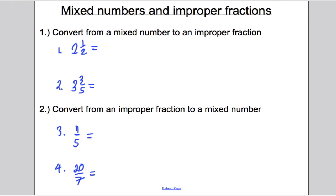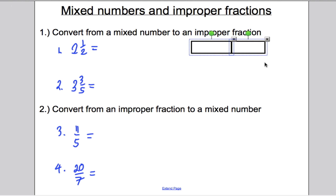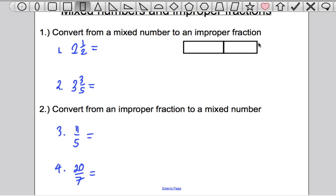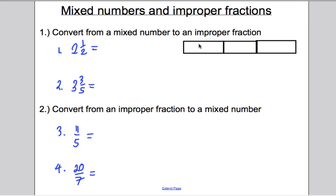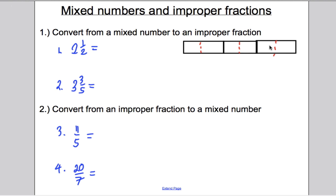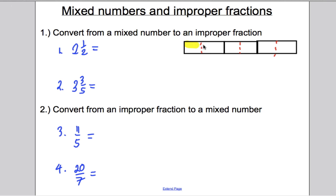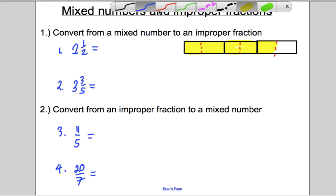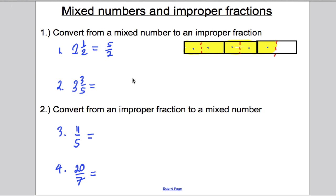Let's draw 2 and a half. We draw three boxes because 2 and a half is bigger than 2 but less than 3. We split them into halves. We want 2 and a half, so we take all of the first box, all of the second box, and half of the third. Now count how many halves we've got: 1, 2, 3, 4, 5 halves. So the answer is 5 over 2 — an improper fraction.